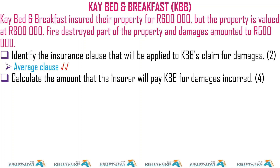Key Bed and Breakfast insured their property for 600,000, but the property is valued at 800,000. A fire destroyed part of the property and damages amounted to 500,000. Even though you insured 600,000, it doesn't mean they give you the full damages — they look at the percentage of your insurance. You need to identify the insurance clause applicable, which is average clause.